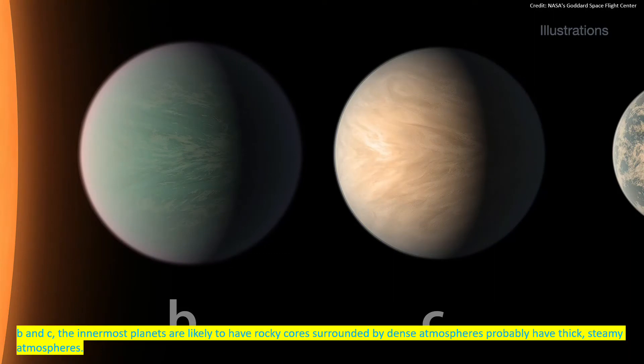B and C, the innermost planets, are likely to have rocky cores surrounded by dense atmospheres. They probably have thick and steamy atmospheres.